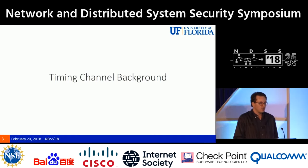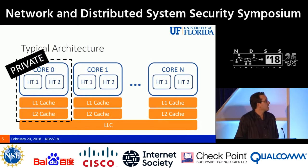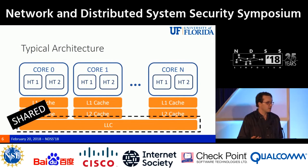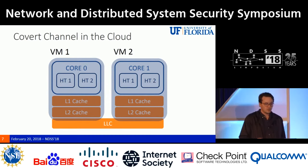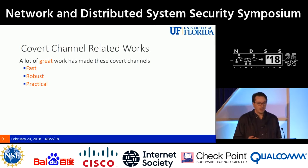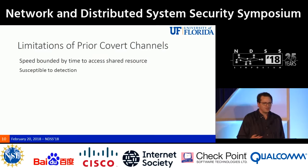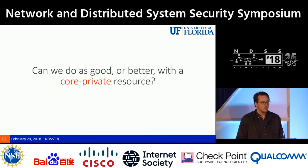In a typical multi-core architecture we have core-private resources and shared resources. Core zero has several hyper-threads; what's bounded in the box is private, and what's outside is shared. When launching a covert channel in the cloud, prior work relies on the shared resource because it's observable across address spaces more reliably. A lot of great work has made these covert channels fast, robust, and practical — but they're bounded by the time to access the shared resource and susceptible to detection. So we ask: can we do as good or better with a core-private resource?